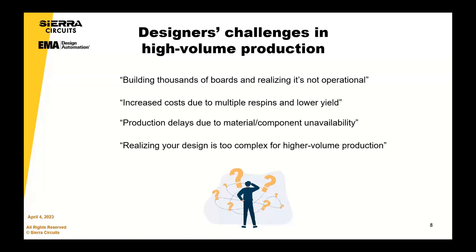Some of the design challenges in high volume production: building thousands of boards and then realising they're not operational. So many times in a typical PCB manufacturing operation, they will take their mass production facility and try to run a prototype through it in a faster time than a normal production run. But within these scenarios, if you don't go through the P1, P2, P3 process and really use that as a chance to bring the board to maturity, you can end up building thousands of products before you get them into the testing part of the design cycle — only to realise that they're either not operational or not as efficient as expected.